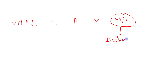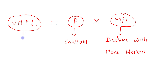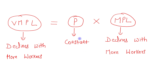We know that marginal product of labor declines with more workers. The price of apples is constant at $10 per bushel. When the price is constant and MPL is continuously declining with the hiring of more workers, the result is that the value of marginal product of labor will also decline with more workers.